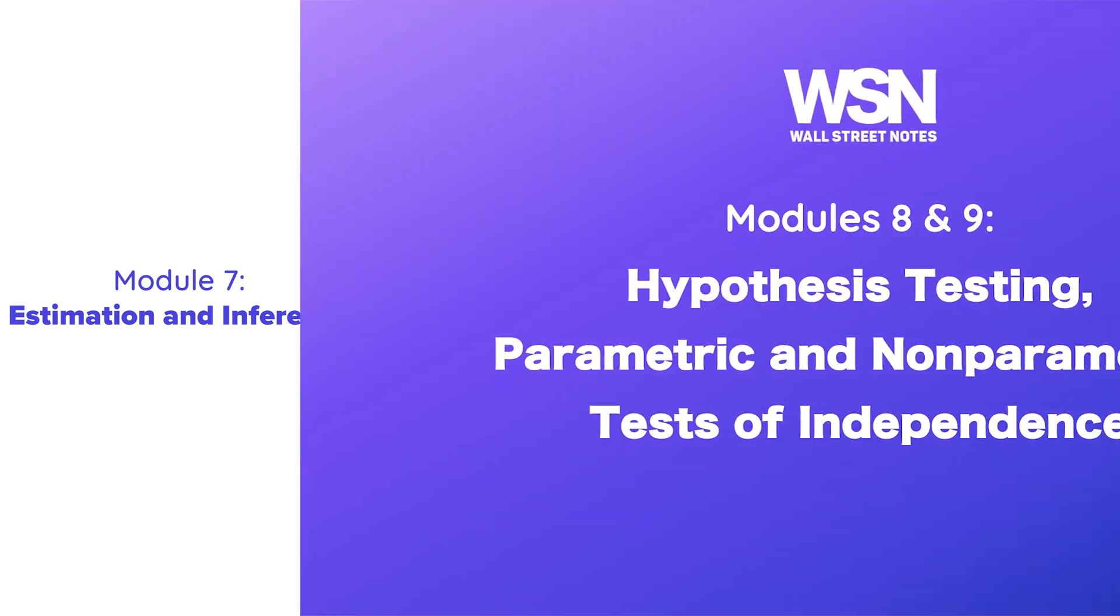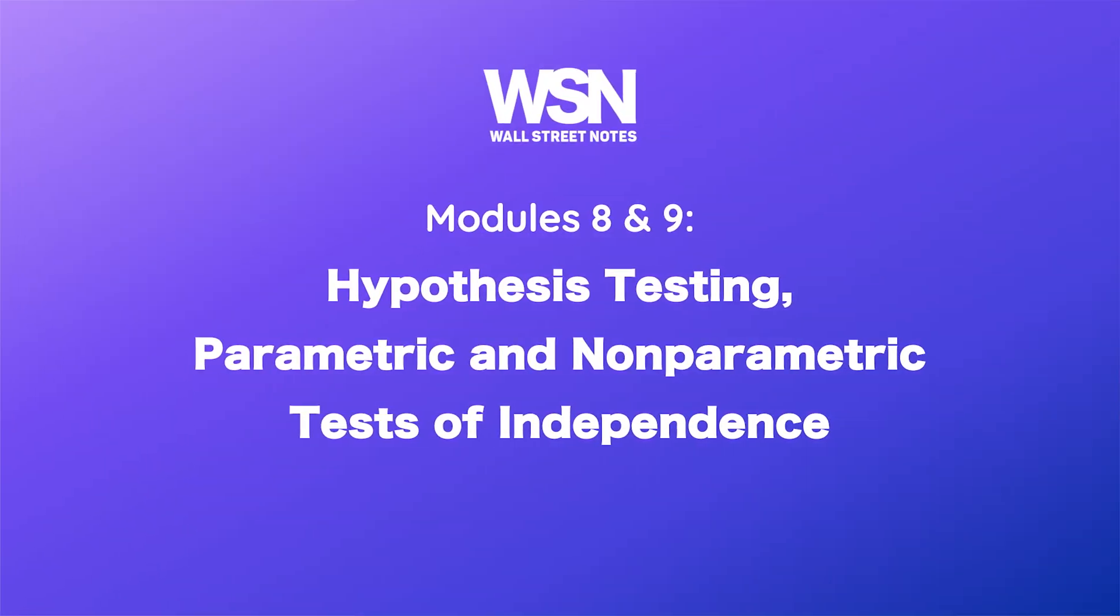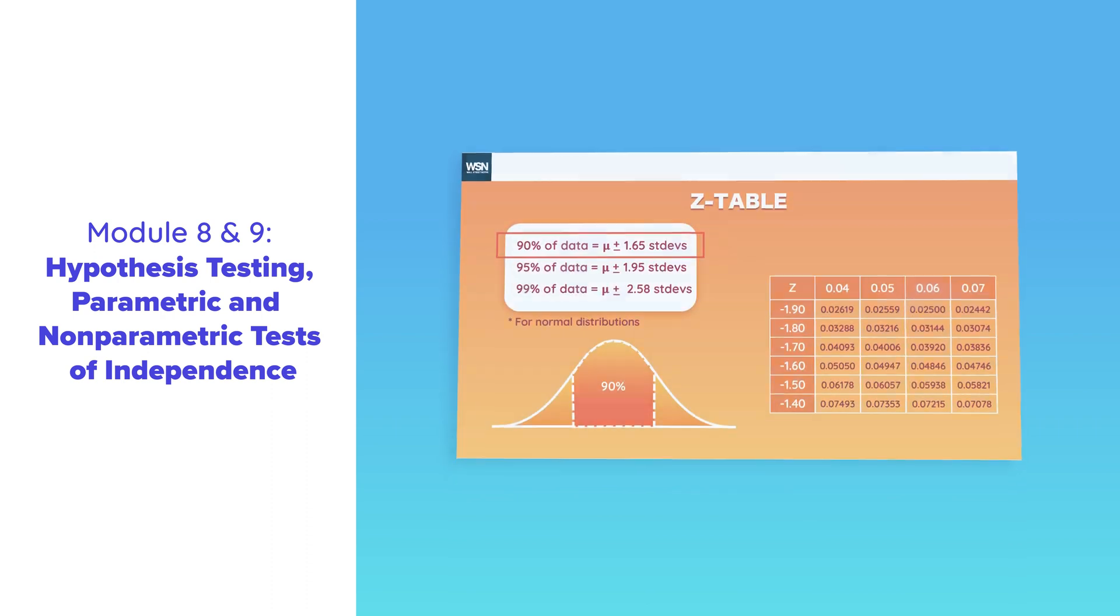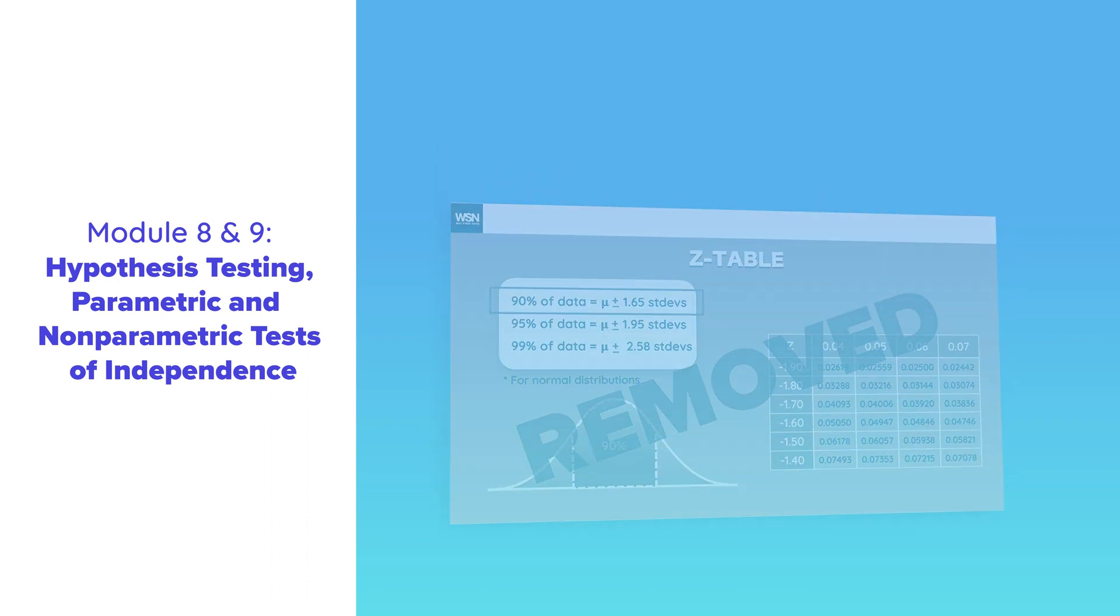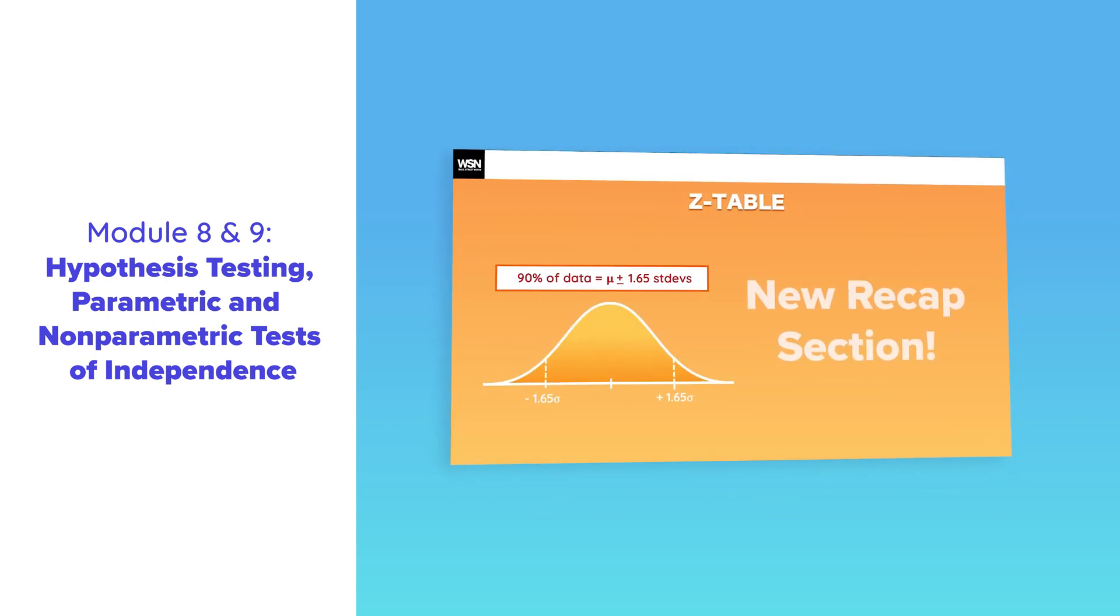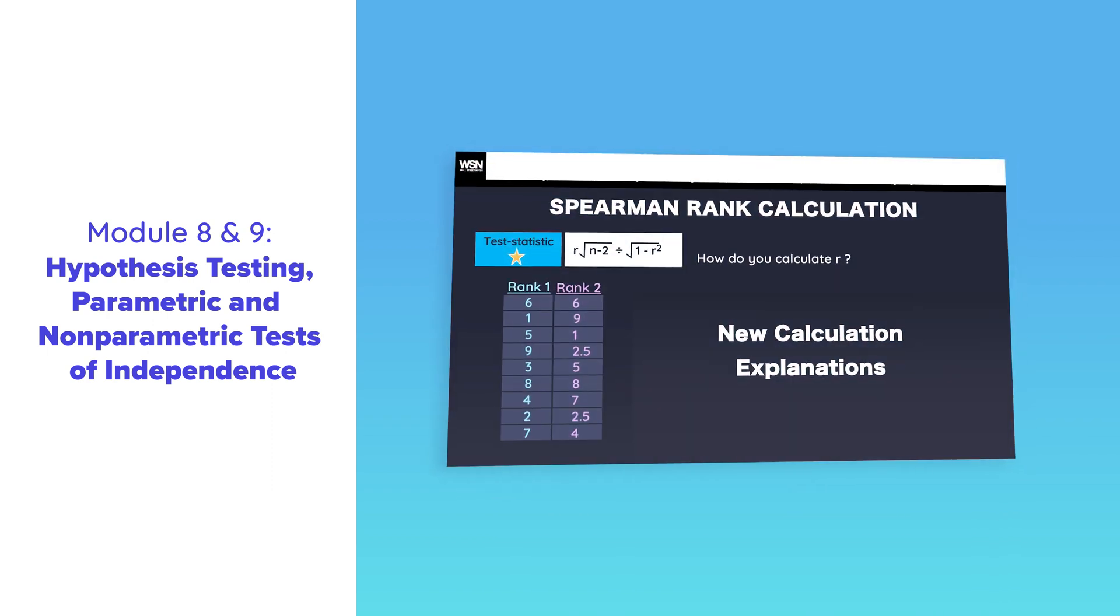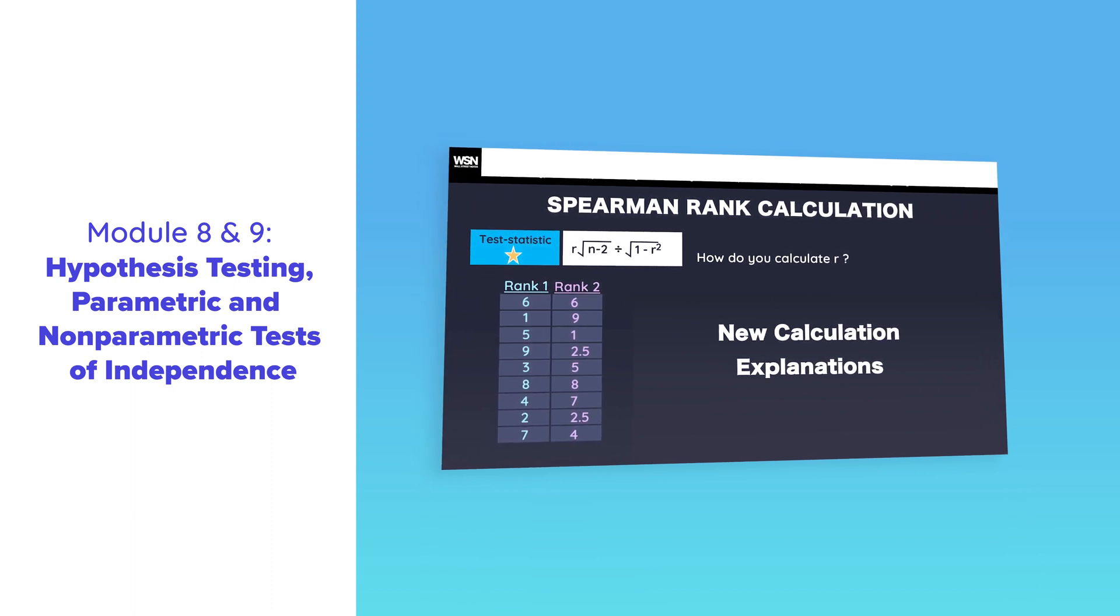Hypothesis Testing and Parametric and Non-Parametric Tests of Independence: Some explanations on confidence intervals and z-tables were removed from the curriculum, but we've added a recap section in our crash course to help you understand and memorize the concepts. Also, the Spearman Rank section has new content on how it's calculated.